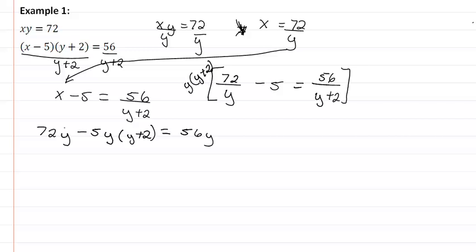Actually this is supposed to be a y plus 2 over here. I'm going to squeeze that in so I don't have to rewrite. So now we have 72y plus 144 minus 5y squared minus 10y equals 56y.